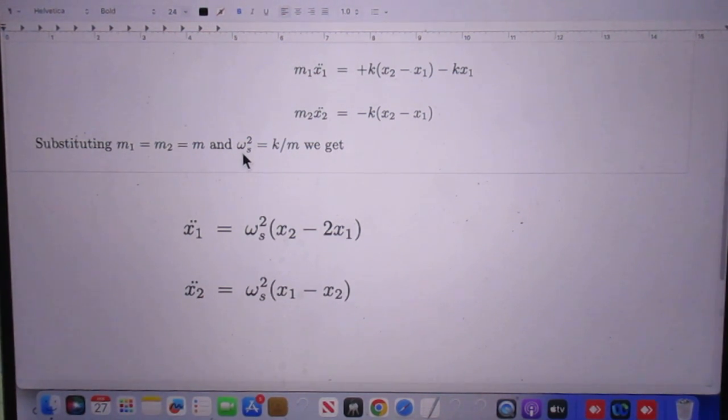And we use this omega S squared to eliminate here K over M. So for K over M, everywhere we write down omega S squared. We do that here for this equation, and we do that here for this equation.